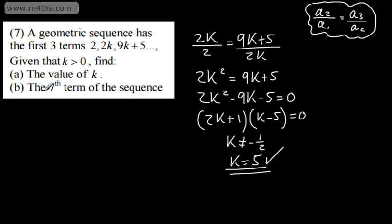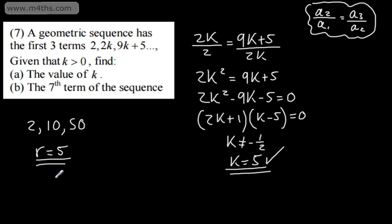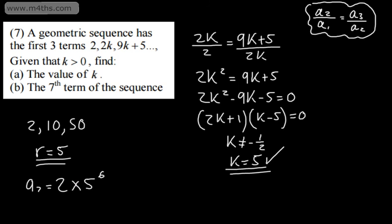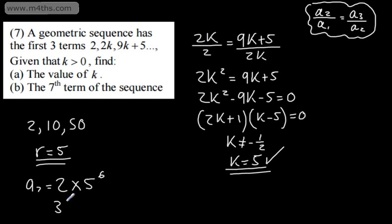We now need to find the seventh term of the sequence. Substituting k equals 5 in, we get 2, then 10, then 9k plus 5 which is 50. From this we can see the ratio is 5, so r equals 5. For the seventh term, a7 equals the first term 2 multiplied by the ratio to the power of n minus 1, which is 6. So 2 times 5 to the power of 6 gives us 31,250. That is the seventh term of the sequence.